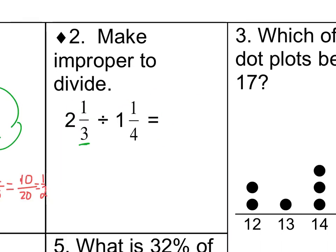So we'll make these improper. 3 is the denominator of 2 and 1 third times 2 wholes, which would give us 6 thirds, plus our 1 third gives us 7 thirds. And then 4, our denominator, times our 1 whole gives us 4 fourths, plus 1 fourth is 5 fourths. And we notice that our denominators do not match, so let's do our two options.